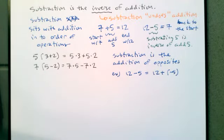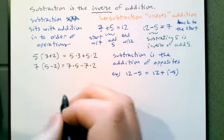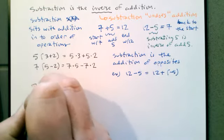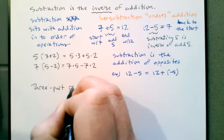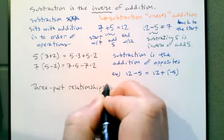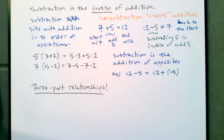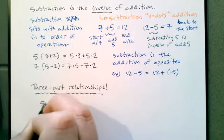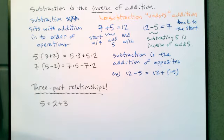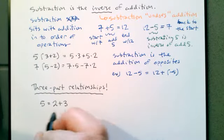We need to look at the relationship between subtraction and addition. This is something I like to refer to as three-part relationships, and it helps us understand the relationship between addition and subtraction. I'm going to take a very simple statement and write it in three different ways — two alternate ways. We know that 5 is equal to 2 plus 3.